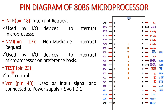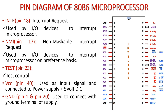The VCC pin is available at pin number 40, where we apply the supply voltage for operation of the microprocessor. Pin number 1 and pin number 20 are both ground pins. These are the ground terminals which provide the reference supply for the circuit.